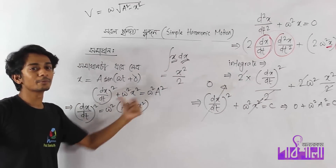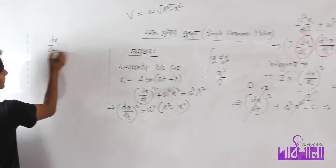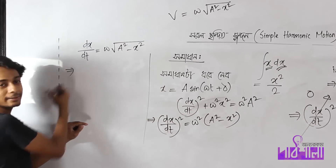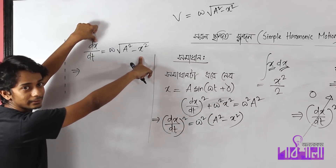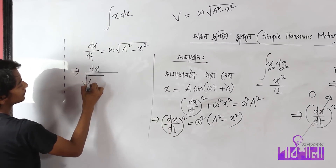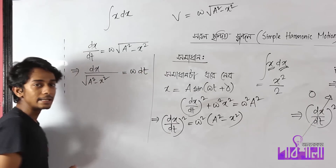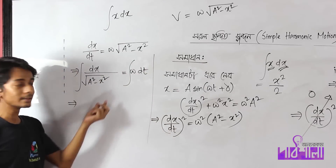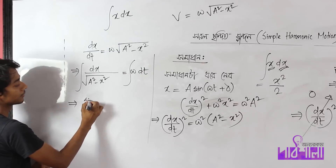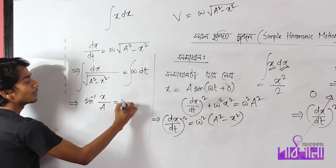Omega root over a-squared minus x-squared. So dx/dt equals omega root over a-squared minus x-squared. We integrate: x-function, root over a-squared minus x-squared, and on the other side omega dt. We integrate. dx divided by root over a-squared minus x-squared gives sin inverse of x over a. We write omega t plus constant.